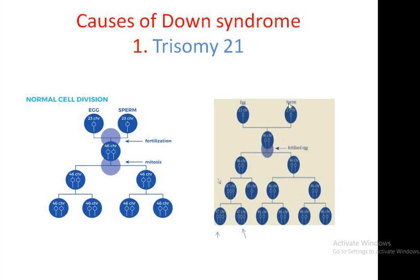Here you can see Trisomy 21 and the genetic breakdown. In normal cell division, the egg and sperm each contain a haploid number of chromosomes — 23 each. After fertilization, they give rise to a zygote containing 46 chromosomes. In the process of mitosis or cleavage, subsequent cells are produced with an equal number of chromosomes — 46 — in every division. This is the case in normal conditions.